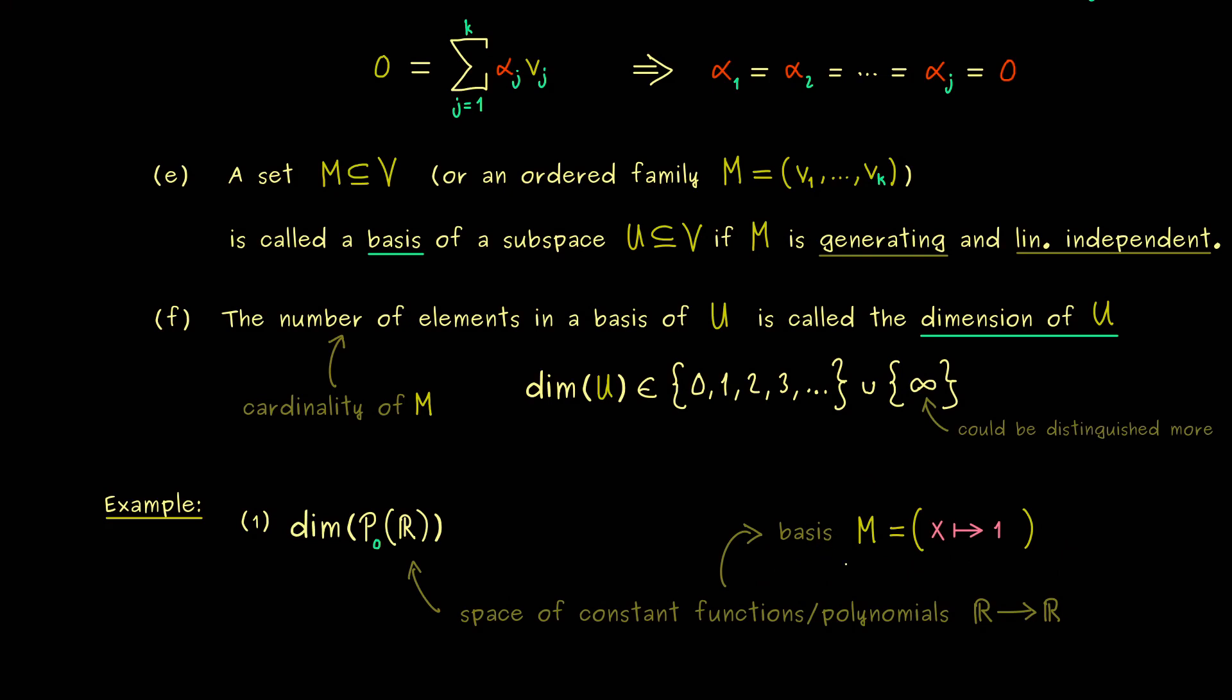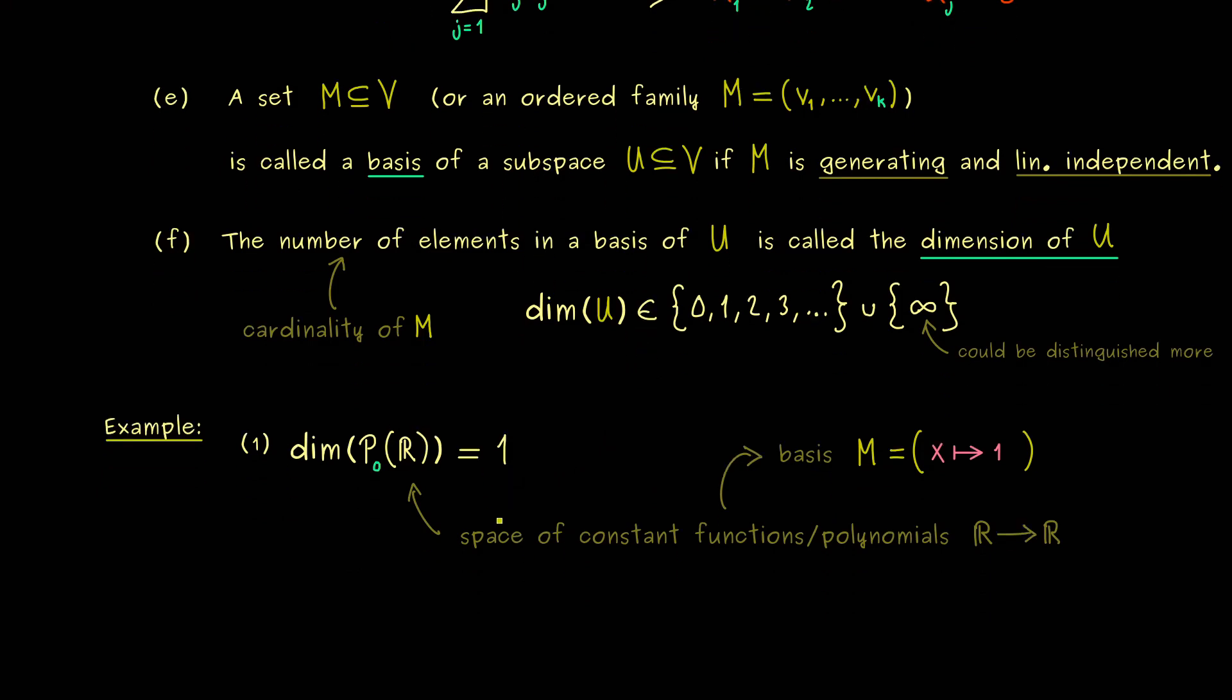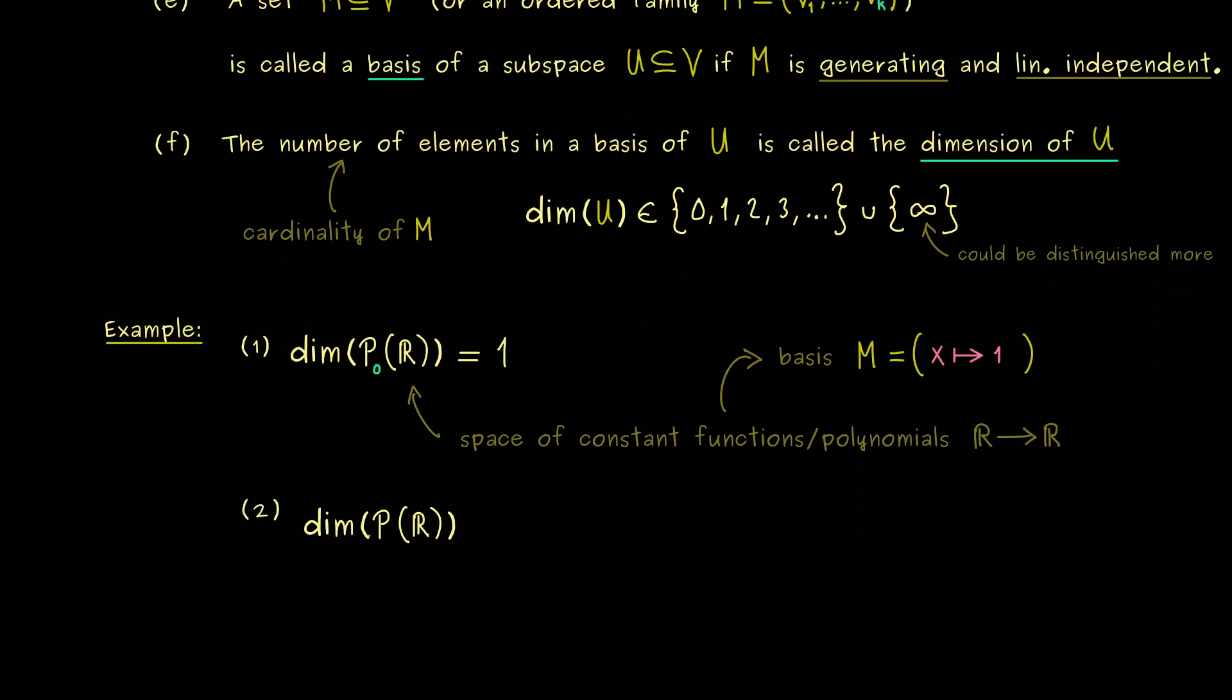And now we immediately see, we get all the other constant functions just by scaling this function. So the conclusion here is, since one element is enough for the basis, the dimension of P_0 is exactly 1. Ok, so very nice, this was our first example, we have a one dimensional subspace.